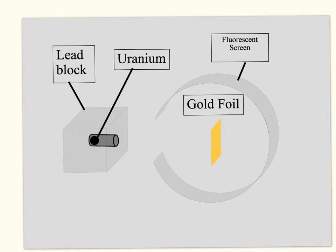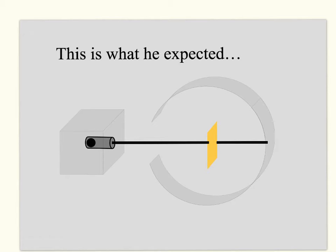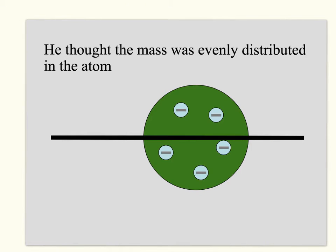In his experiment, he had a lead block with a pipe containing uranium inside it. Surrounding the gold foil was a fluorescent screen. What he expected was that the alpha particles would pass through without changing direction, based on J.J. Thompson's results — because he thought the mass was evenly distributed within the atom.